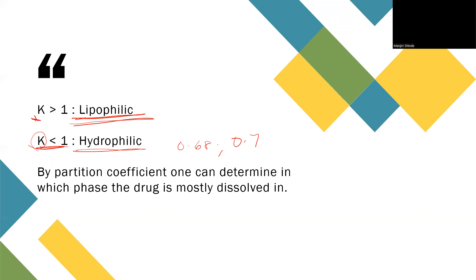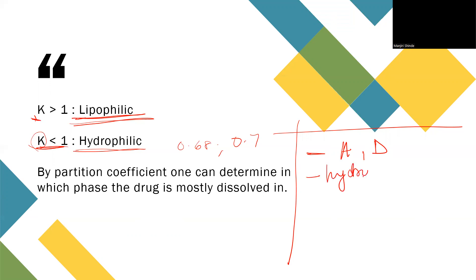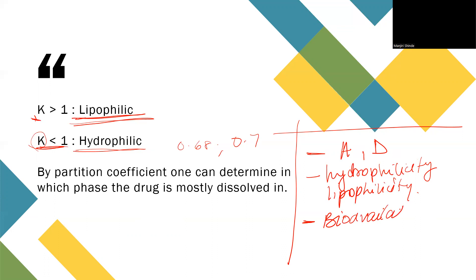The role of partition coefficient is that it is mainly used to determine absorption parameters and distribution parameters of the drug within the body. Hydrophilicity and lipophilicity can also be determined. You can also determine the bioavailability of the drug — a very important term. So these are the roles of partition coefficient, which is denoted by K.